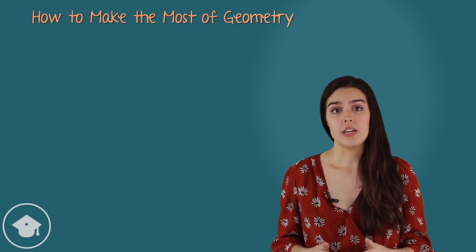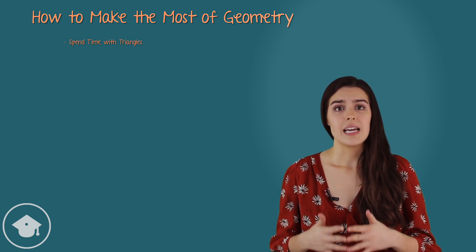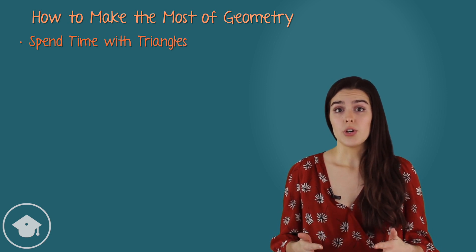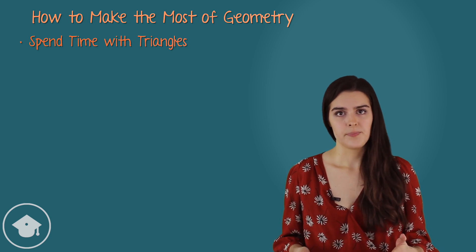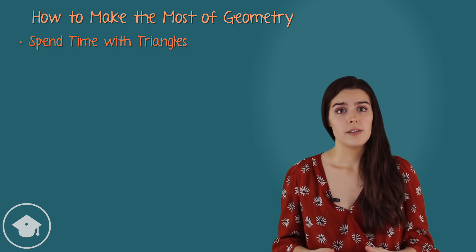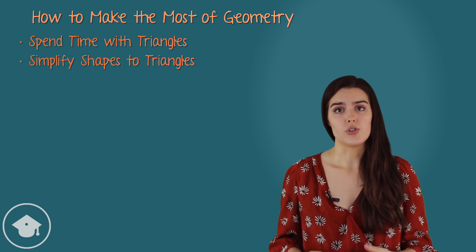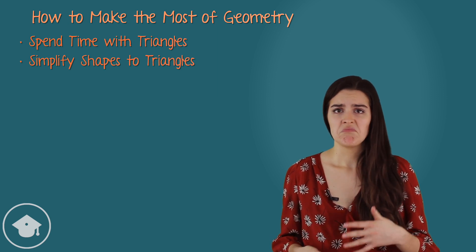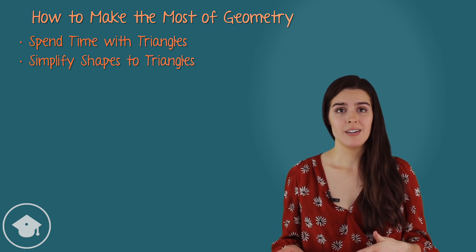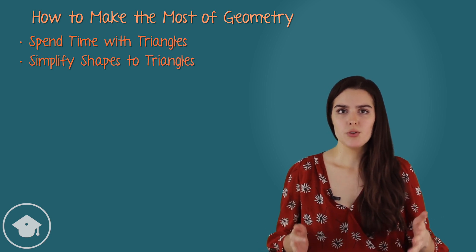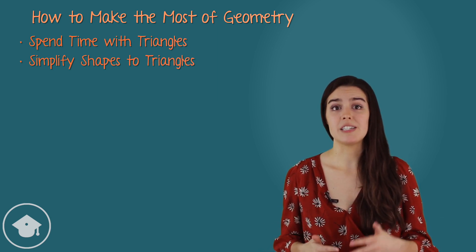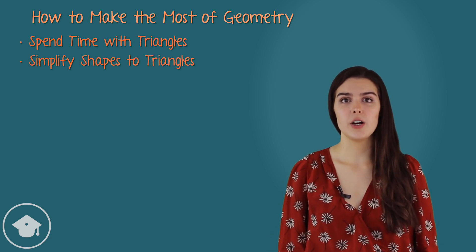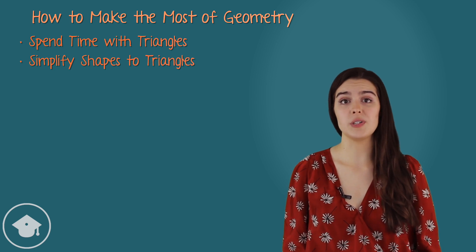If there's one thing you do want to invest time in memorizing, it's triangle rules and formulas. Triangles are the most commonly tested shape on the GRE, so it's worthwhile to be really comfortable with them. Similarly, like we saw with the distance formula, pretty much everything on the GRE can be simplified down to triangles. Have a diagonal line? Turn it into a right triangle. Don't remember the formula for a parallelogram or trapezoid? Turn it into a rectangle and two right triangles. Weird shape? Divide it up into right or equilateral triangles. Knowing your triangles inside and out can help you even on problems that aren't explicitly triangle-based.